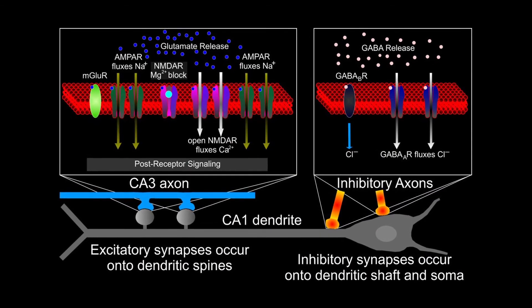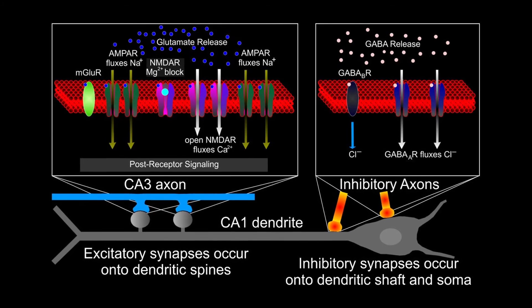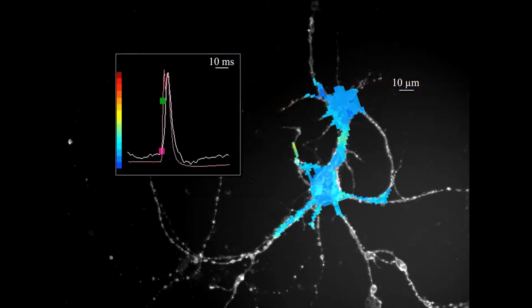As a final interesting note, not only do postsynaptic terminals have multiple types of receptors, it has also been shown that multiple kinds of neurotransmitters can be released from the same presynaptic terminal. For example, striatal neurons have been shown to release both glutamate and dopamine.